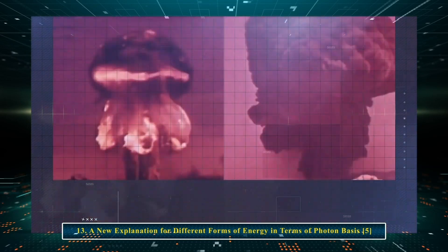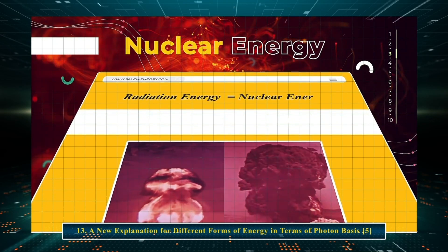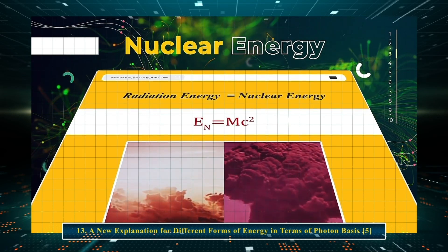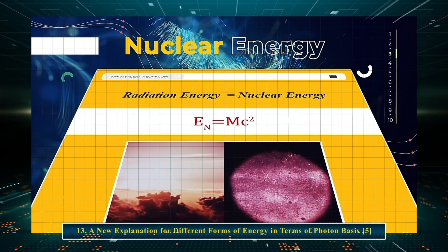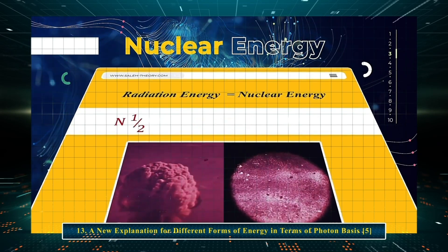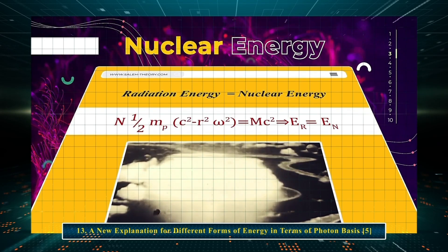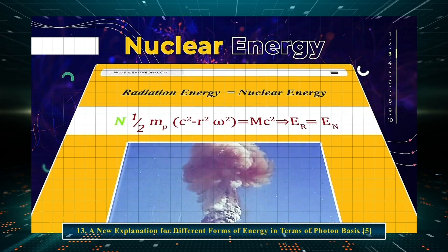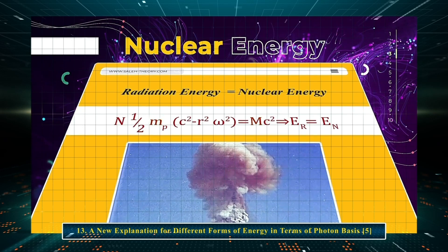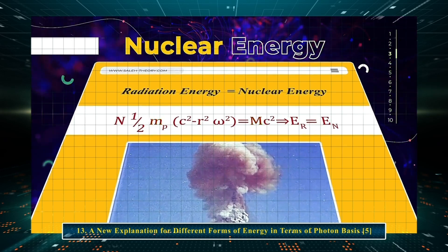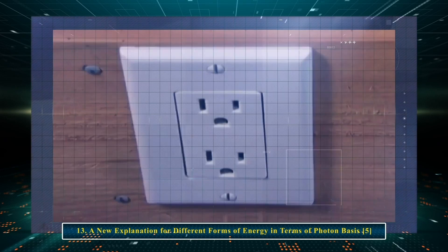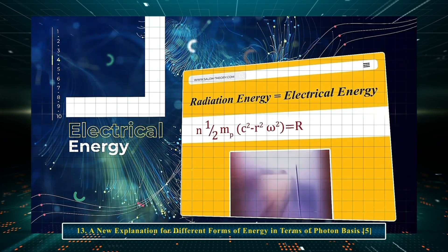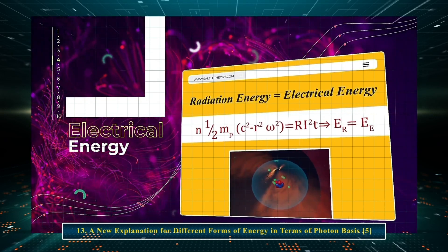As the formula E of N equals MC² is valid in nuclear explosions, meaning the total mass converts to photon particles, we can assume that nuclear and radiation energy of photons are equal: nuclear energy equals radiation energy, where N is the number of photons in an object with mass M. In light bulbs, electrical energy is converted into radiant energy, so radiant energy equals electrical energy, where N is the number of photons emitted from the lamp.